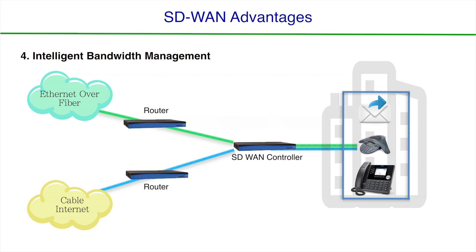This can obviously save you a lot of time and potential equipment costs. Second, this pooling of resources maximizes your overall investment. As illustrated here, SD-WAN takes full advantage of all the bandwidth that is connected to the SD-WAN router. None of your bandwidth is left unused, as it could be in a traditional A-B failover scenario. This concludes part one of our segment on SD-WAN.